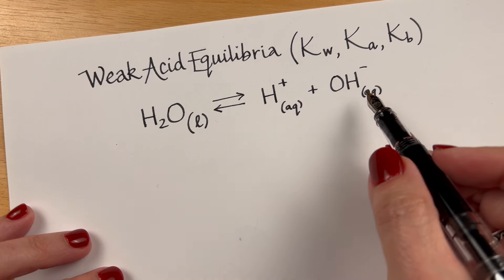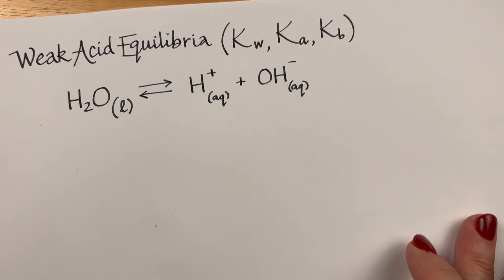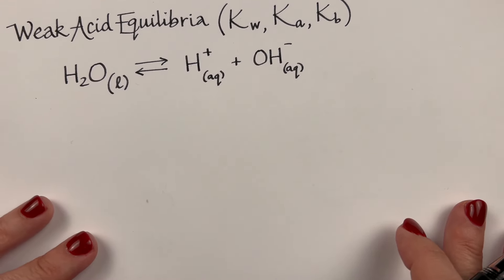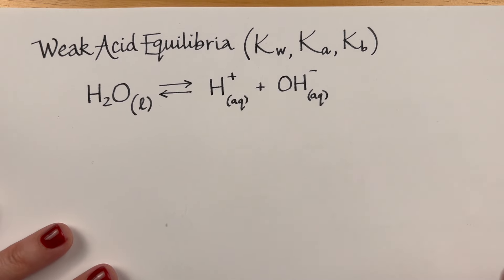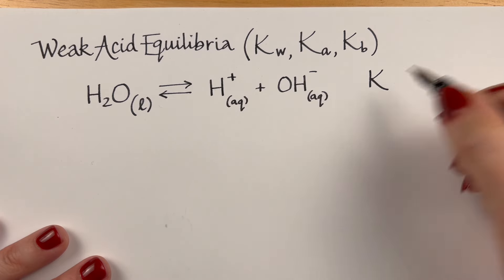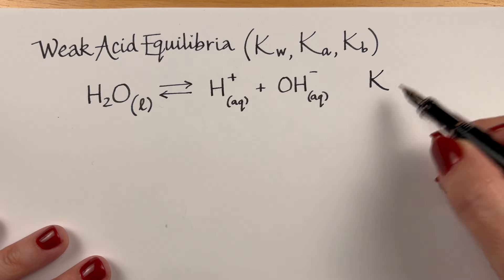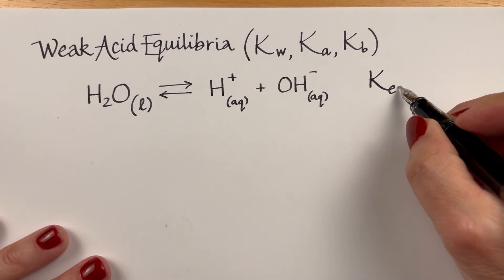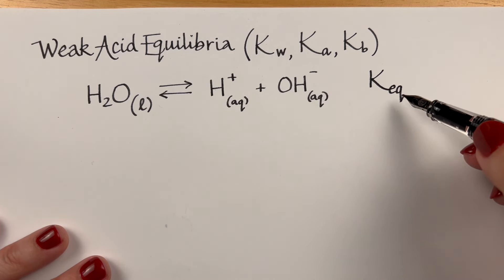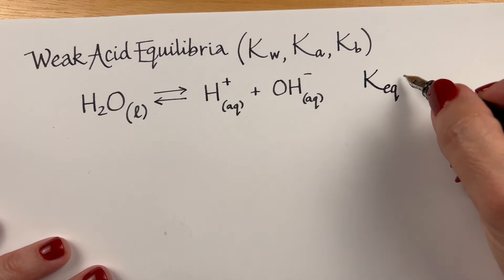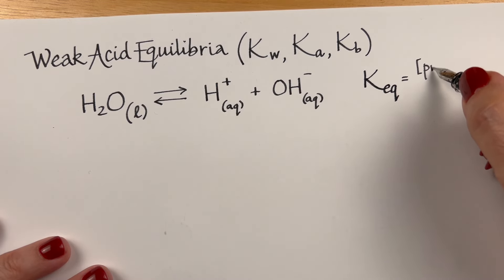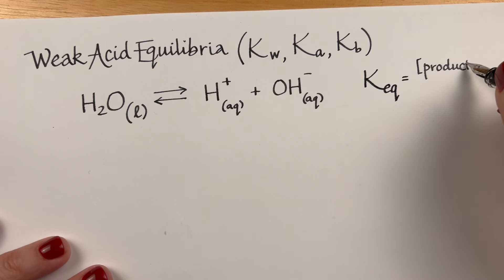I explained in the previous video that another way to write this is with two molecules of water, and there's a proton transfer from one to the other, which gives you the hydronium ion H3O+. But for this video, I'll just simplify it and write it in this form. For these kinds of calculations, using H+ or H3O+ does the exact same thing. So either way is fine. With all equilibria, you can write an equilibrium constant expression.